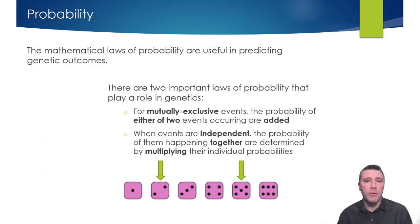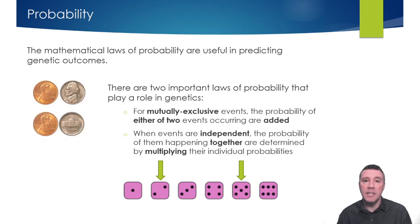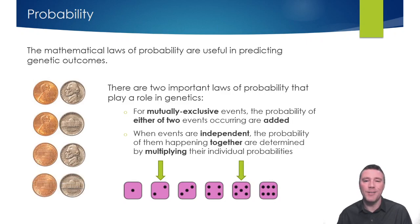Here's another example. Consider this penny and this nickel — the probability of flipping heads on each is one-half. But were you to flip both the penny and the nickel, the probability of heads on both coins is one-quarter, just as the probability of heads on the penny and tails on the nickel, or tails on the penny and heads on the nickel, or tails on both coins.